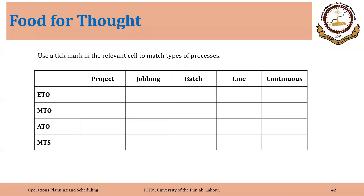This slide summarizes what we have discussed so far. In rows, I have written these four types of processes based on point of customer order, and in columns, I have written five process types based on variety and volume.